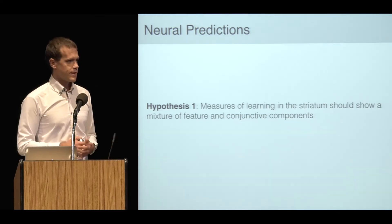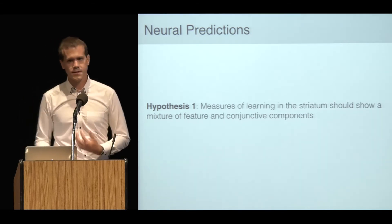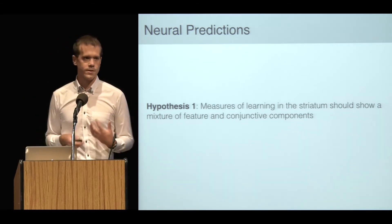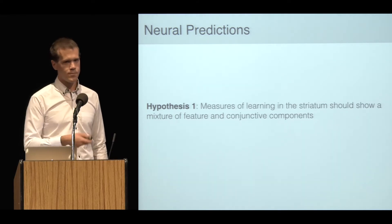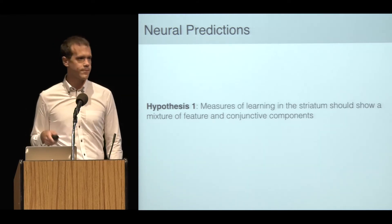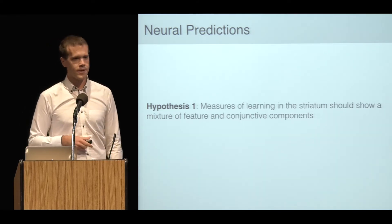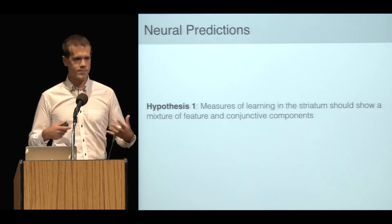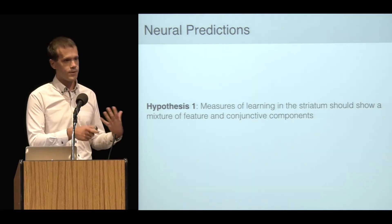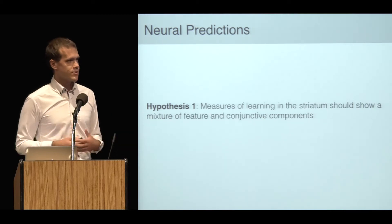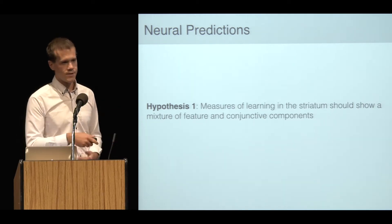The first thing I wanted to do is see if I could find evidence of this multiplicity of learning strategies in the neural data. To do this, I'm going to exploit this well-learned phenomenon that the striatal bold response changes in proportion to prediction error, and see if I can find contributions of a more configural conjunctive learning strategy and a more feature-based learning strategy in this response.